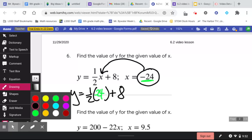To finish evaluating this, I'm going to do one-half times negative 24, which is negative 12. And then negative 12 plus 8 is going to give you your final answer, and I'll let you finish that on your own.